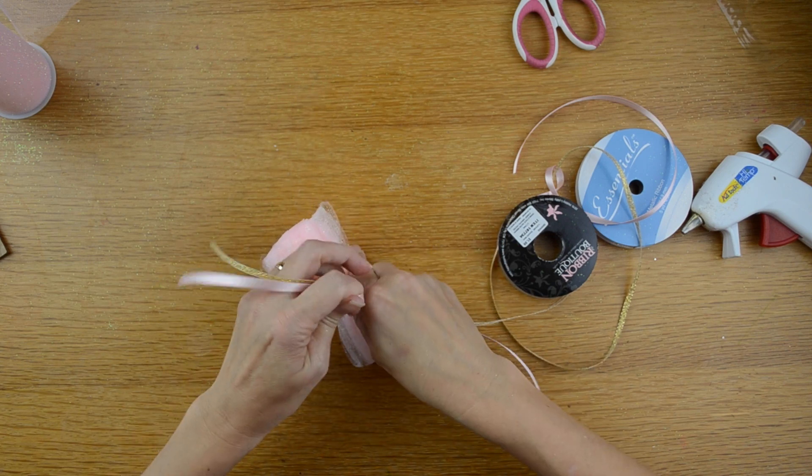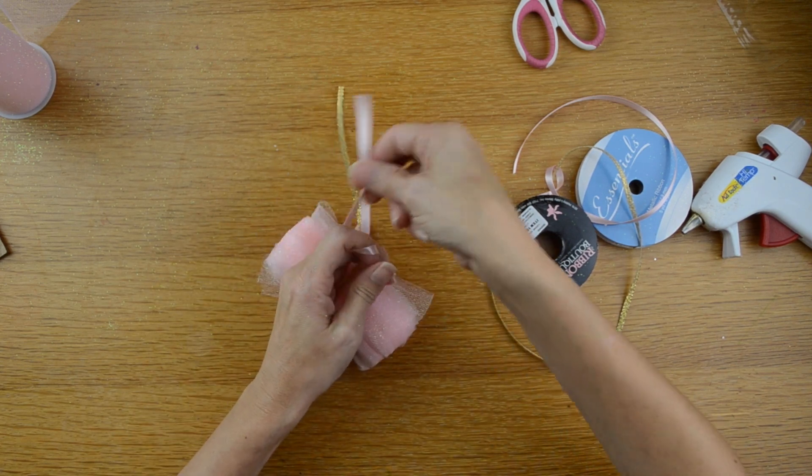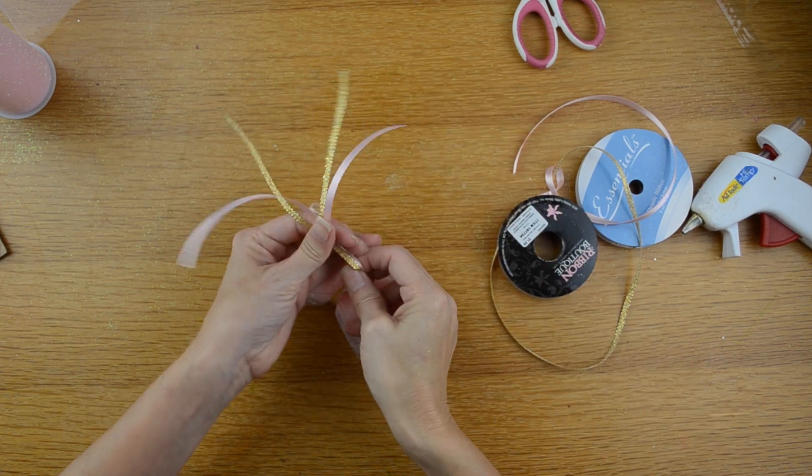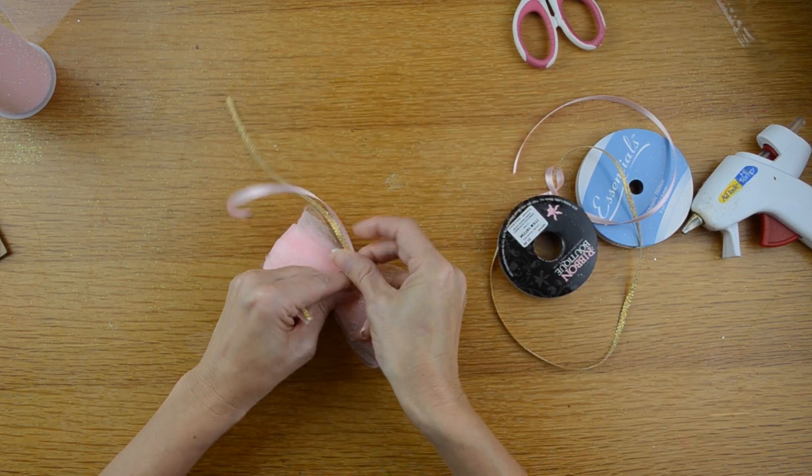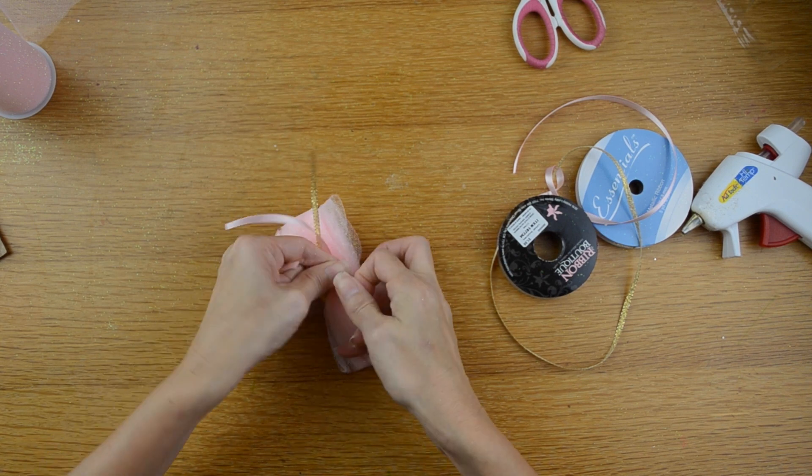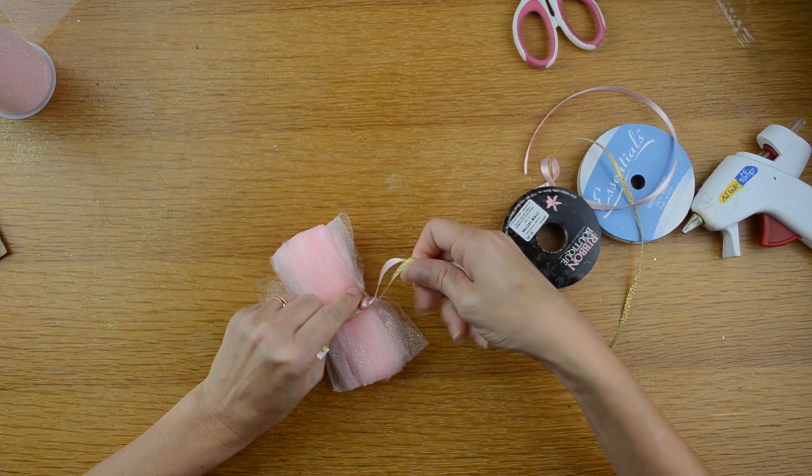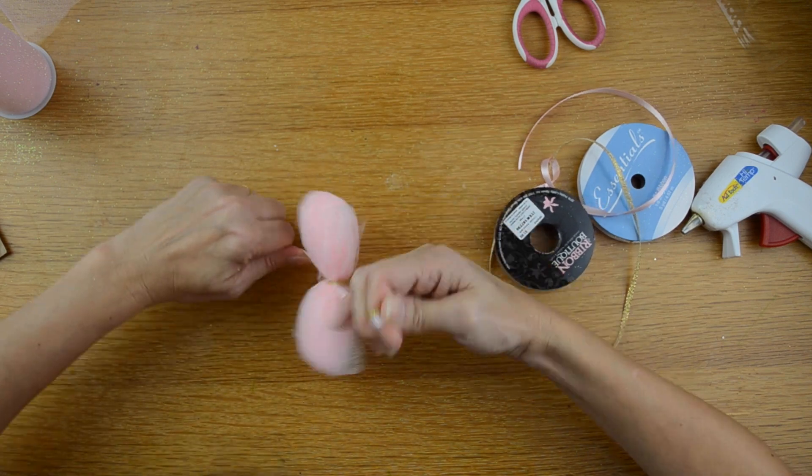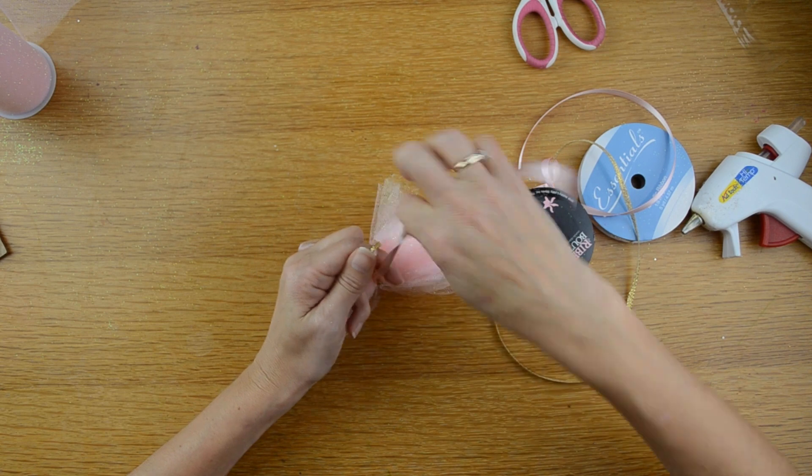I'm going to make sure that they are even here. Just go ahead and tie that really tight around the middle of the ribbon and make sure it's in the middle because you want your pom to be even. Just tie it really tight.